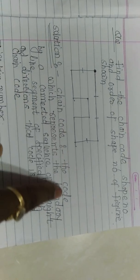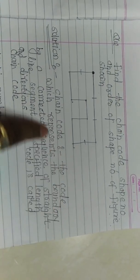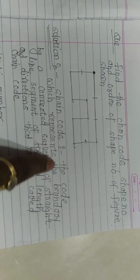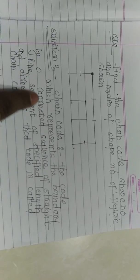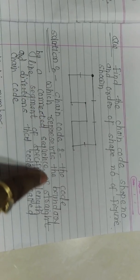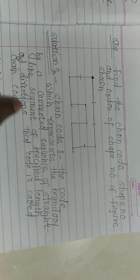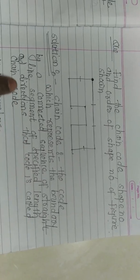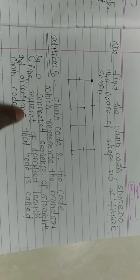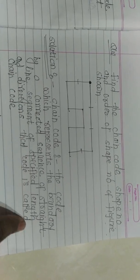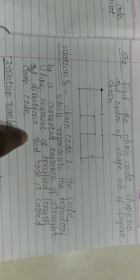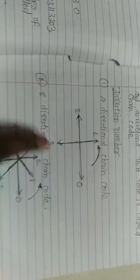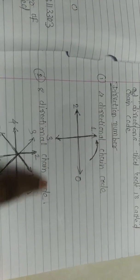First, we see what is meant by the chain code. Basically, the chain code is used to represent the boundary of an object by a connected sequence of straight line segments having a specified length and direction. That is called the chain code. There are basically two types of chain code: the four-directional chain code and the eight-directional chain code.